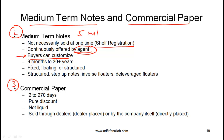Medium term notes can have a maturity period from as little as 9 months to as long as 30-plus years. This clearly means the term 'medium term notes' is a bit of a misnomer, because the duration can range from very short term to very long term. Medium term notes can be fixed rate, floating rate, or structured.